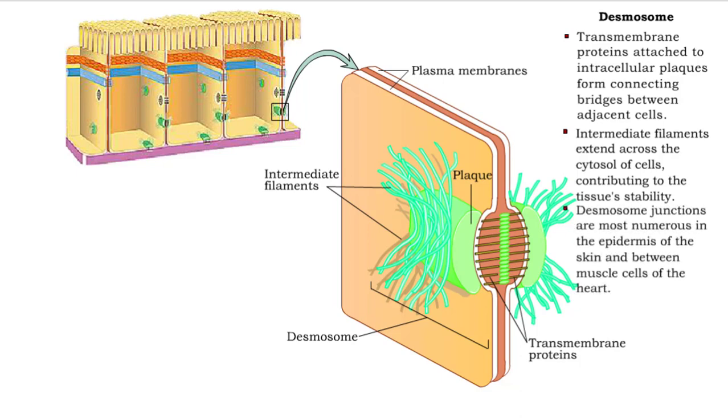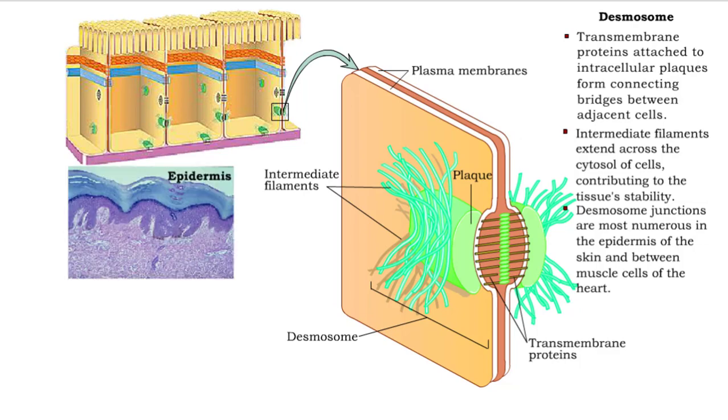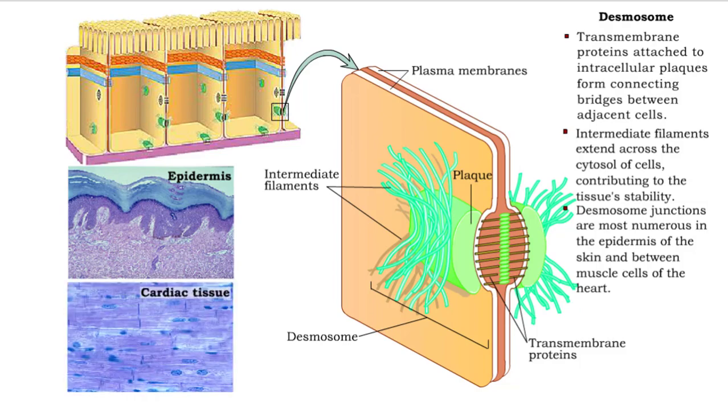These junctions help provide stability to tissues and are abundantly found in the epidermis of the skin and between the muscle cells of the heart.